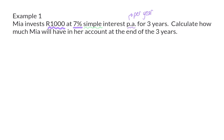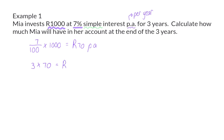We now know that 7% means 7 out of 100, and to determine 7% of 1000, we multiply. This gives us 70 Rand, which is the interest that she receives per year. Mia has this account for 3 years, which means that she will receive 70 Rand 3 times, and in total she will receive 210 Rand interest for the 3 years.